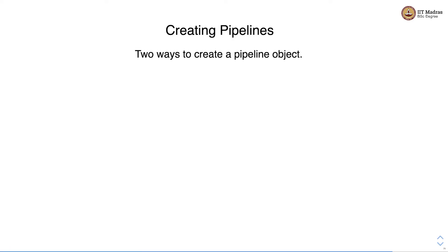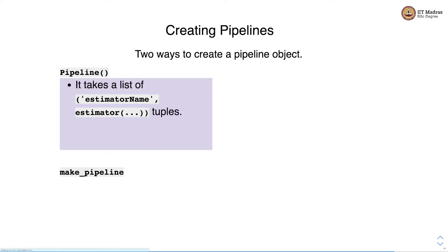There are two ways to create pipeline objects: either using the pipeline constructor or using the make_pipeline method. The pipeline constructor takes a list of tuples. The first part of the tuple is some kind of an ID of the transformation we want to apply, and the second is the transformer object itself.